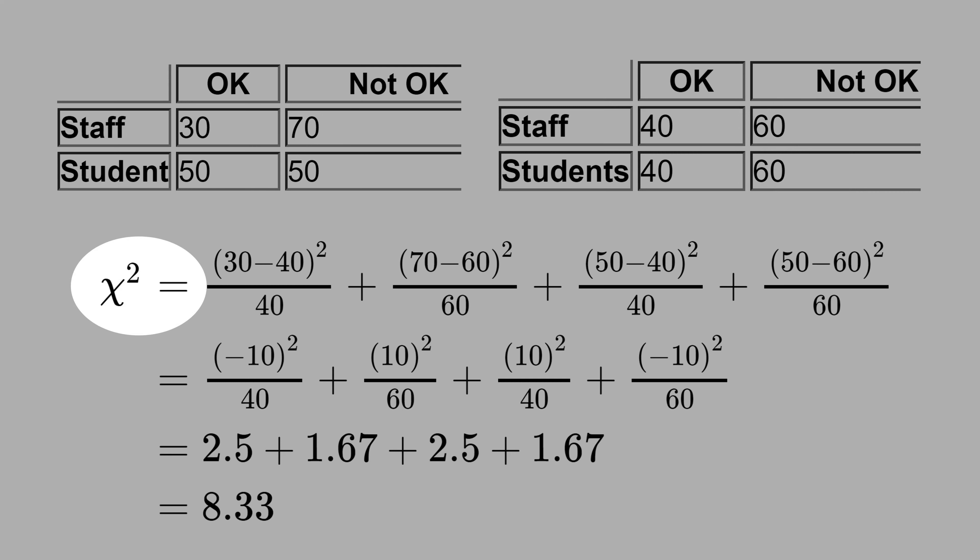Now, let's calculate the chi-square. This 30 minus 40 comes from here, 30 and 40. And we square the deviation. That's why the name chi-square. And we divide by 40. That comes from here.